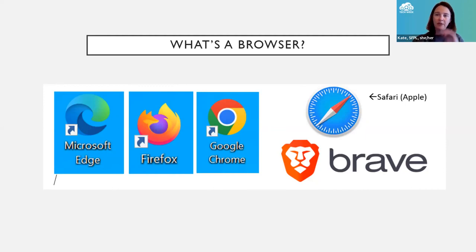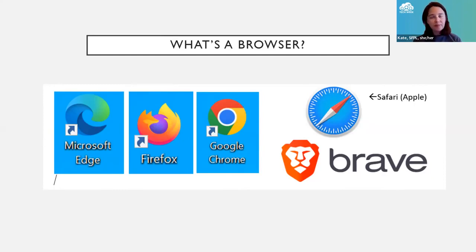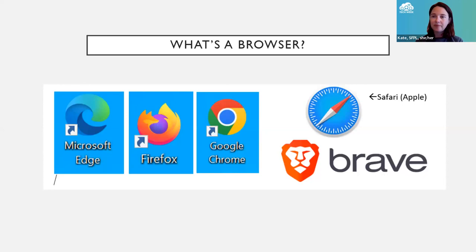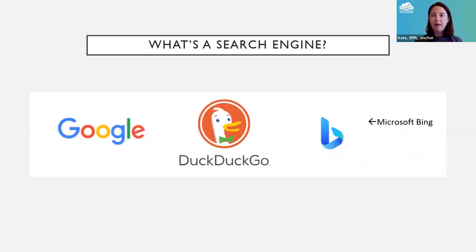If you have a Mac, you're probably using Safari. There's also the Brave browser, which is fairly new — it blocks ads and pop-ups the whole time you're using it, so it's kind of a crowd favorite sometimes. You can do an internet search in any browser, but you'll do that using a search engine.